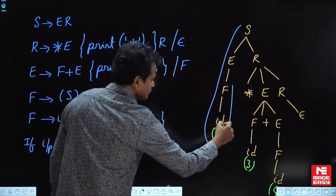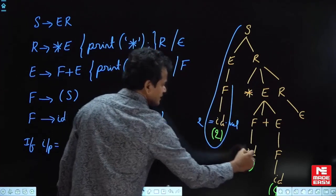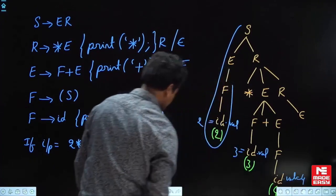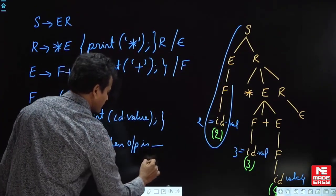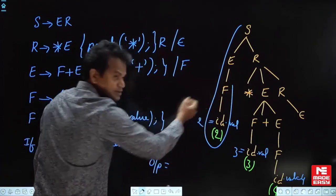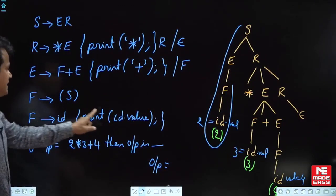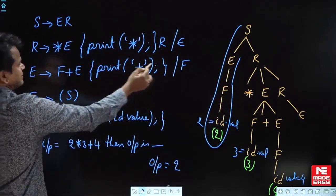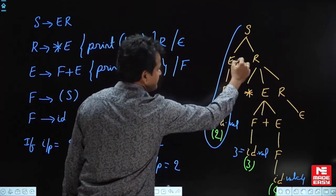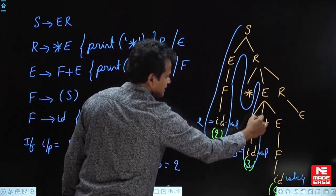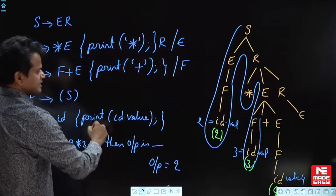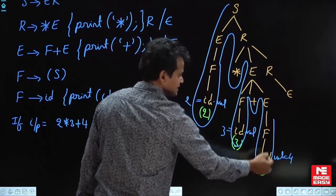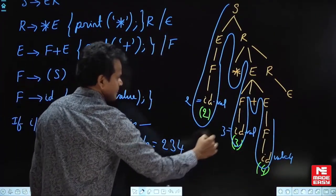When id is reduced into F, what is the action? Print id dot value. Here id dot value is 2, here it is 3, and here it is 4. So when id is reduced into F, the action is print id dot value — that is 2. F is reduced into E, but no action is given, so leave it. Again id is reduced to F, action is print id dot value, that is 4.